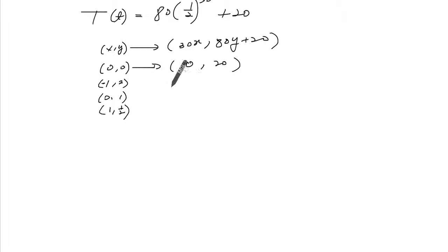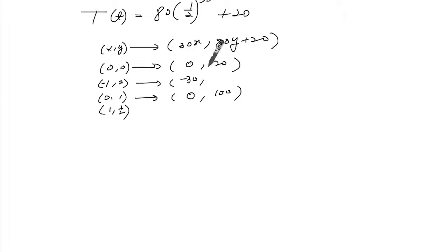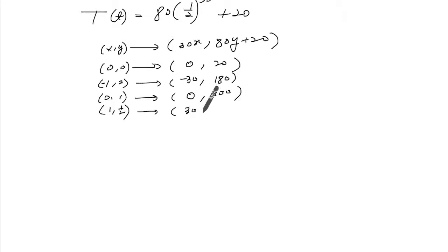This is the y-intercept. So the transformed points are: (0, 100), (-30, 2) gives 160 to 180, and at 30, half gives 40 — so 60.